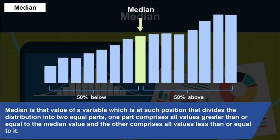Median is that value of a variable which divides the distribution into two equal parts. One part comprises all values greater than or equal to the median value, and the other part comprises all values less than or equal to it.